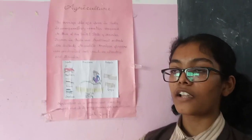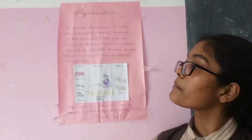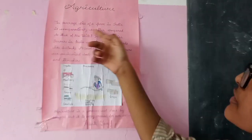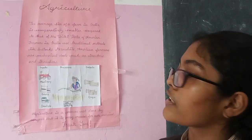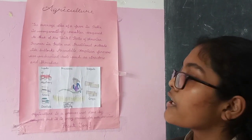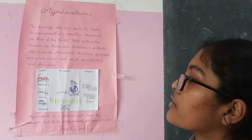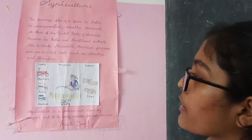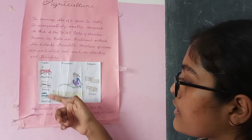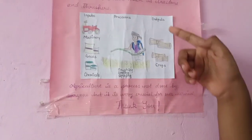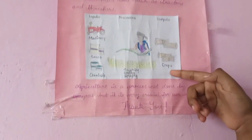Hi, I am Heba Susan Shaji of Class 8. Today I will be explaining the difference between the farming systems in India and the USA. The average size of a farm in India is comparatively smaller than that of the United States of America. Farmers in India use traditional methods like bullocks, while American farmers use mechanized tools such as tractors. The inputs for farming are machinery, seeds, and chemicals. The processes are plowing, sowing, and spraying. And finally, the output is crops.